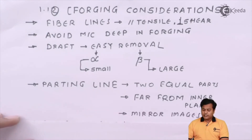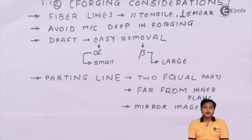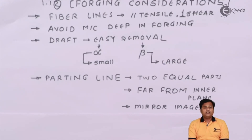The next consideration is the mirror image. When we prepare parts in forging, make sure that both of them will be mirror images of each other — that is, above the parting line, the segments created will be mirror images of each other. This will help the parting line to be created very easily.